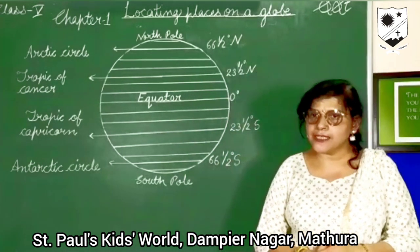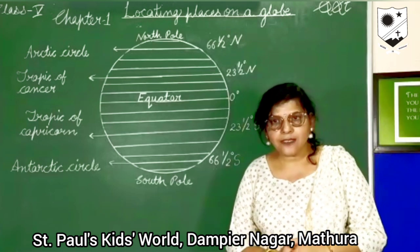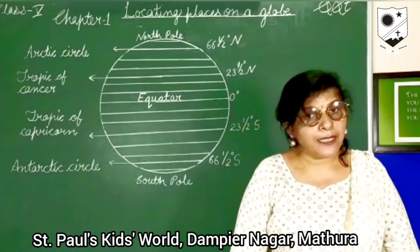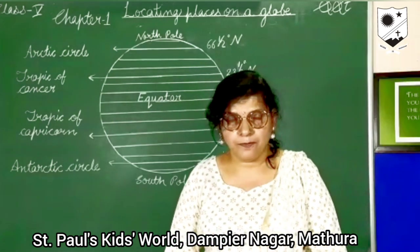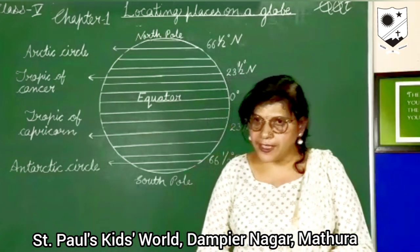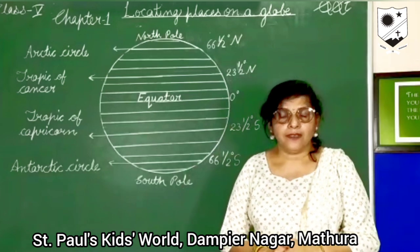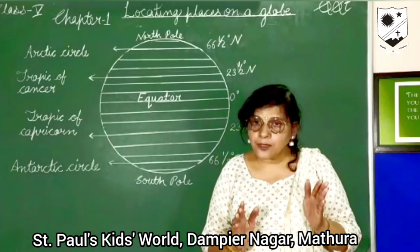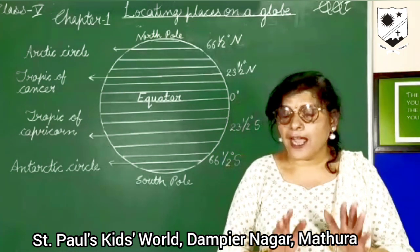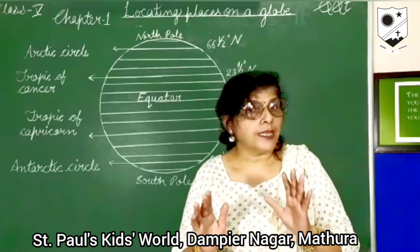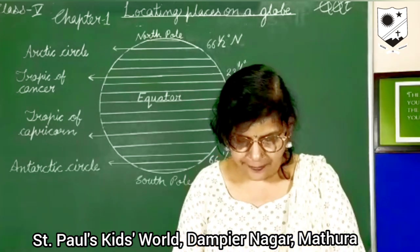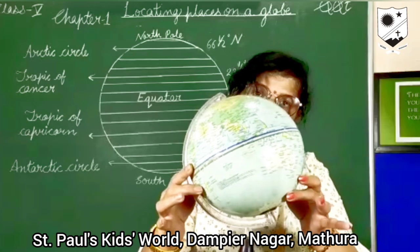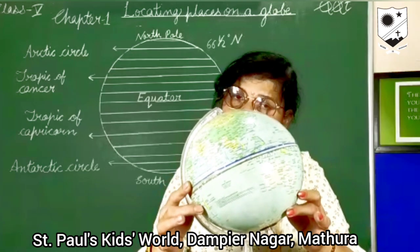Our first chapter is locating places on globe. So first of all, tell me what is globe? A globe — a small model of the earth — is known as a globe. Now I want to show you the globe also. All of you have seen this. This is a globe.